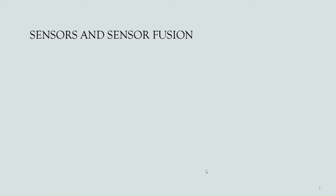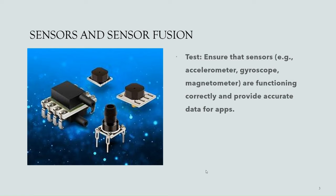Let's move on to our second category: sensors and sensor fusion. This includes tests that ensure sensors — for example, accelerometer, gyroscope, magnetometer, proximity sensors, etc. — are functioning correctly and provide accurate data to the application. If sensors produce inaccurate data or fail to work as expected, device manufacturers may need to release updates that improve sensor compatibility and performance.